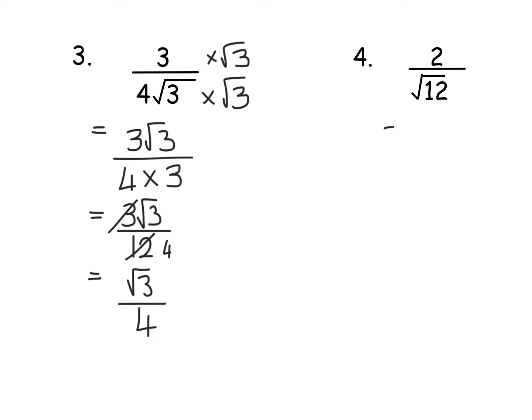Let's have a look at the next one. So we've got 2 over root 12. So I'm going to times top and bottom by root 12 which gives us 2 root 12 all over root 144 which is just 12.